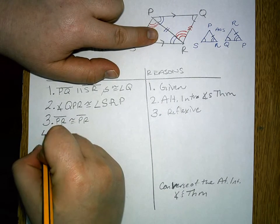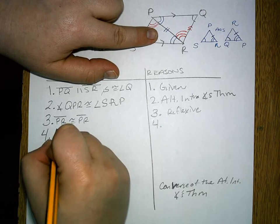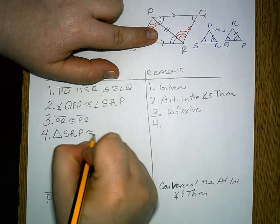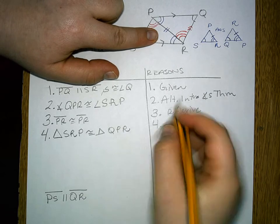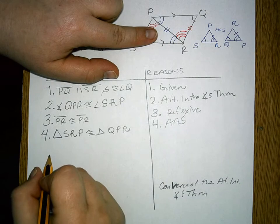Finally, for this part of the proof, we can say that triangle SRP is congruent to triangle QPR by the angle-angle-side theorem. That's our first half of the proof.